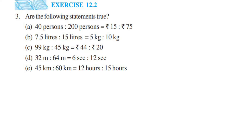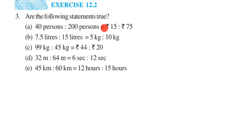Here is a question from Exercise 12.2, third question — chapter is Ratio and Proportion. The question is: are the following statements true? They have given five statements. The equal sign means the two ratios are in proportion, so they're asking us if they are in proportion or not.